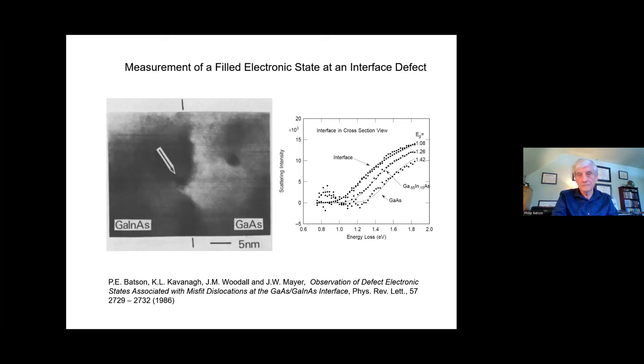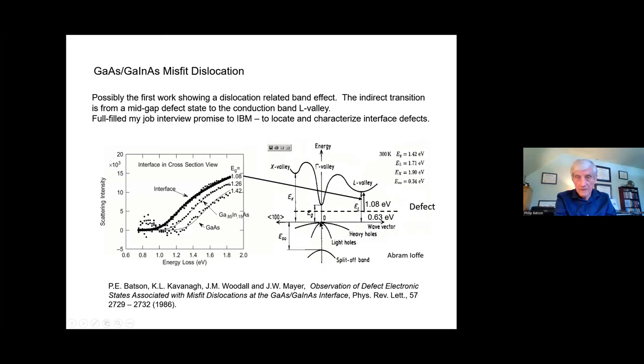So what are we looking at here? First of all, in the bulk where you've got nowhere else to go, you do see the direct gap. But when you're looking at the defect, if there's a defect state there, that state's localized. So it produces a flat band that covers the whole of the Brillouin zone. So the scattering that you see in this experiment is from the filled state of the flat band out to the L Valley, out near the zone edge. And that's the 1.08 that we're measuring. So the state exists about 0.63 above the valence band edge in the middle of the gap.